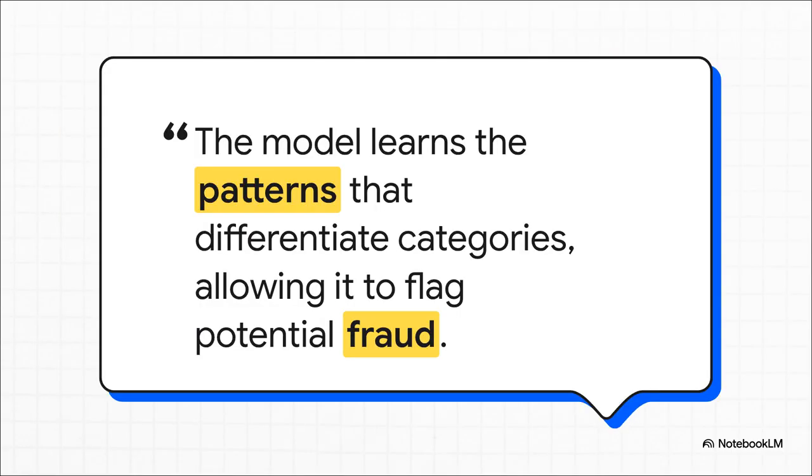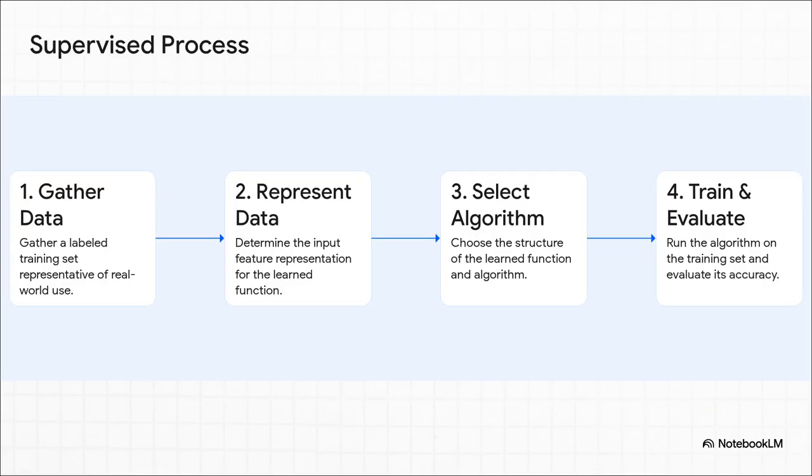A perfect example of this in the real world? Credit card fraud detection. An algorithm gets fed millions and millions of past transactions. And every single one is clearly marked, this was fraud, this was legitimate. It crunches all that data and learns the super subtle patterns of what fraudulent activity looks like. That way, when a brand new transaction comes in, it can go, hey, wait a minute, this one looks fishy. And the thing to remember here is that this whole process is really, really structured. It follows a clear path. You have to start by gathering all that labeled data, which is a huge job. Then you figure out how to present that data to the machine, pick the right algorithm for the job, and then you train it and test it to see how accurate you got. It's very methodical, very goal-oriented.